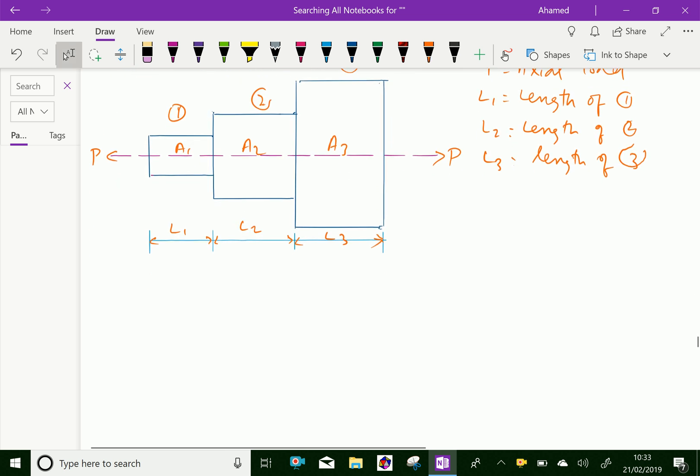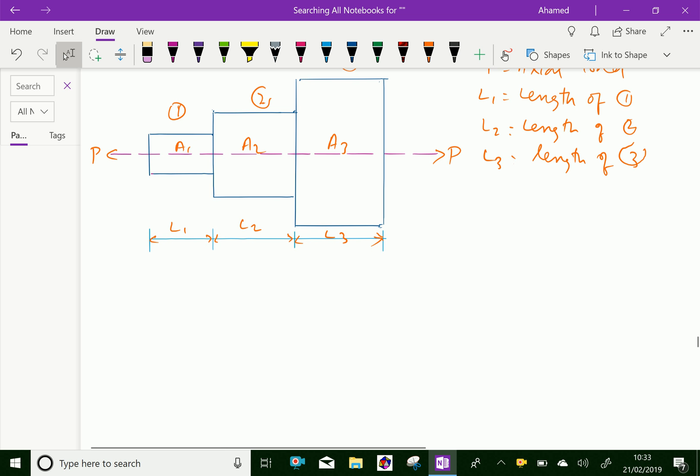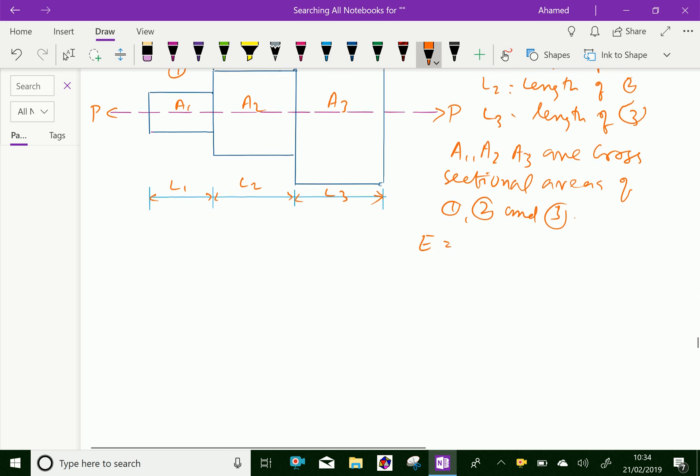Now, A1, similarly A1, A2, and A3 are cross-sectional areas of section 1, 2, and 3 respectively. Now let E be the Young's modulus.